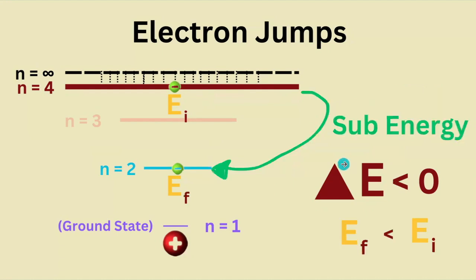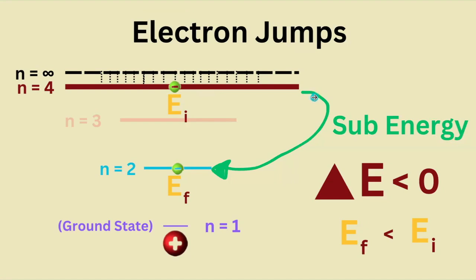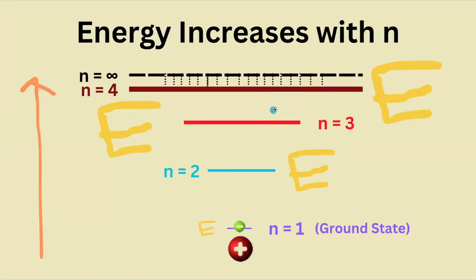Conversely, if the electron started at the higher energy n equals 4 shell and then went to a lower energy n equals 2 shell, the electron lost energy, so our change in energy is negative.